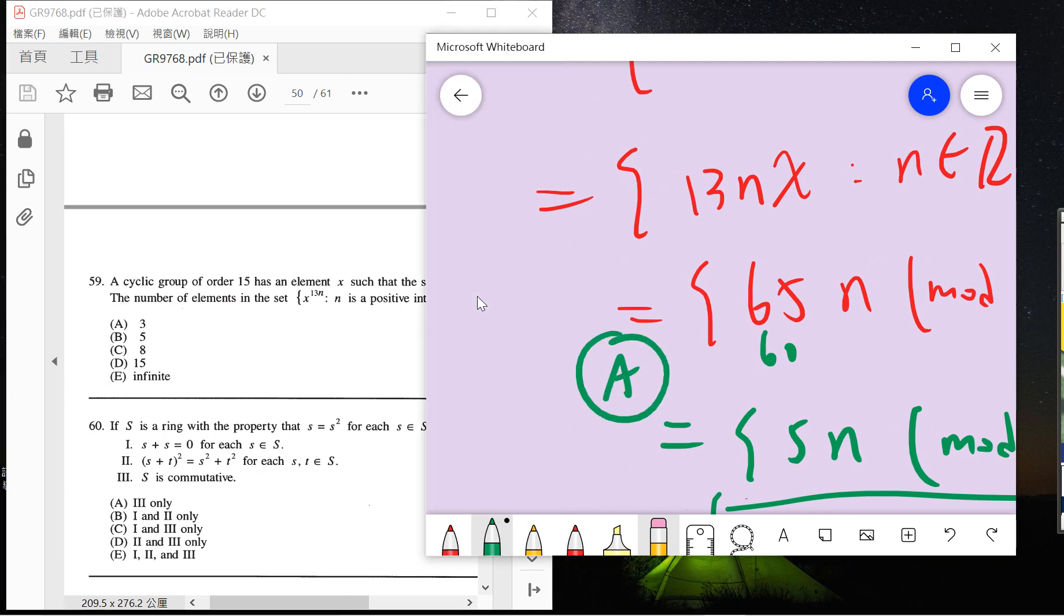So this problem is somewhat technical, but you just follow the hint and do whatever computation you want because the group order is small so you can still do this. That's it.